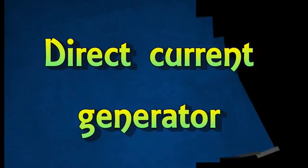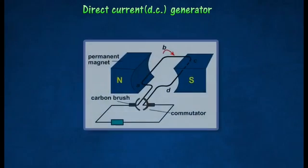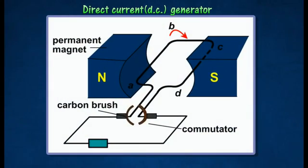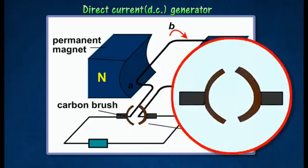Direct Current Generator. A simple direct current generator consists of a rectangular coil of wire mounted on an axle, between the curved poles of a permanent magnet. The split ring commutator reverses the connections of the coil with the external circuit every time the coil passes through the vertical position.